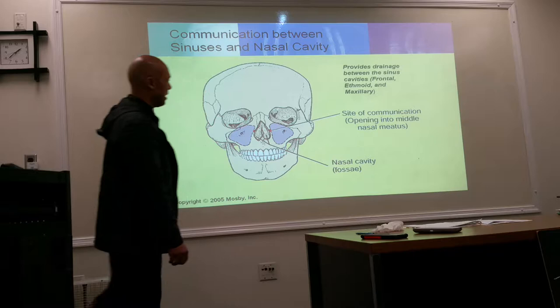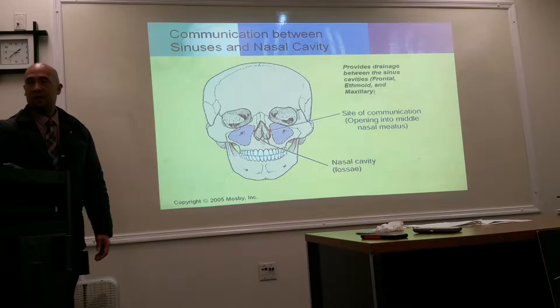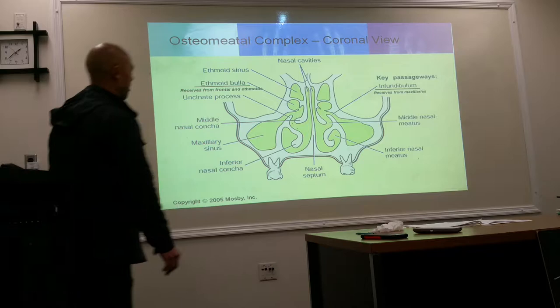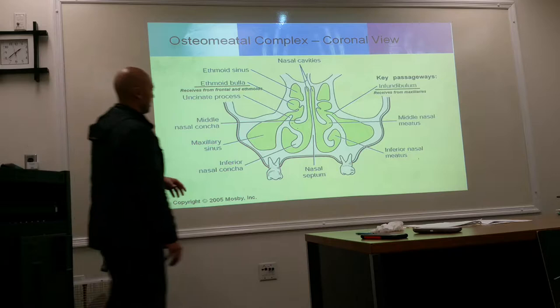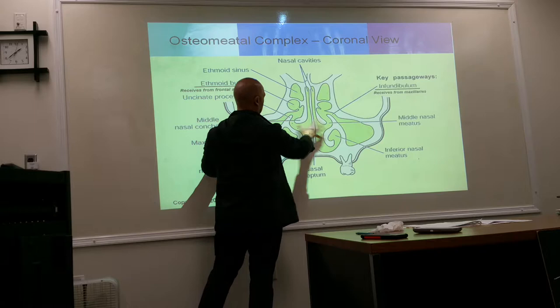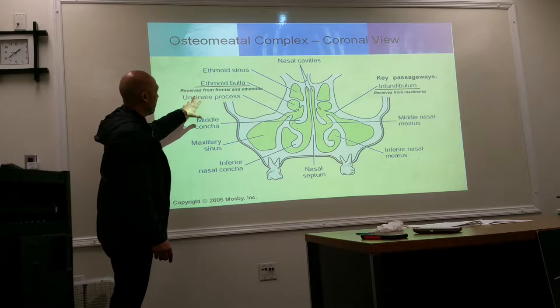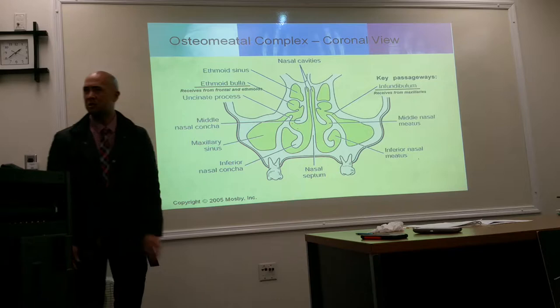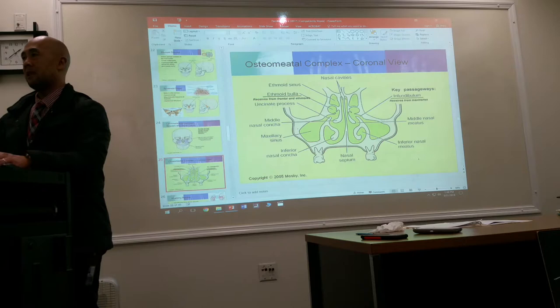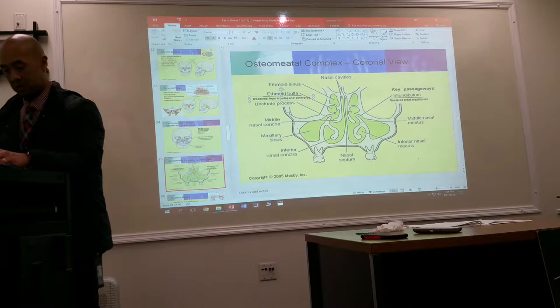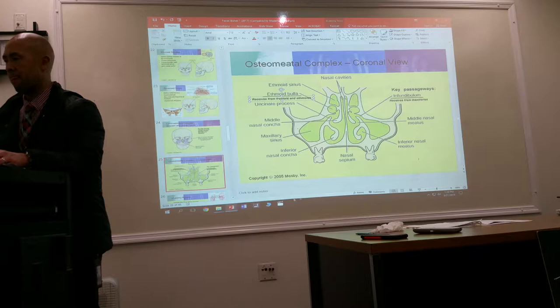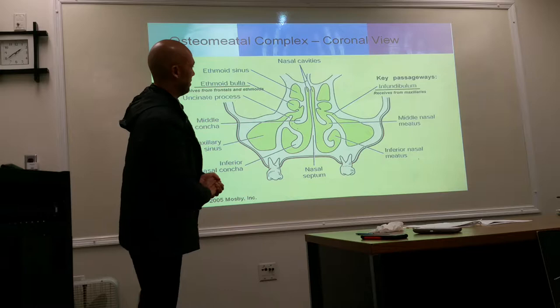Getting into the specifics of the osteomeatal complex — how the sinuses drain — the white part on the image is bone. The ethmoid bulla receives drainage from the frontal and ethmoid sinuses. The infundibulum receives from the maxillary sinuses so they can continue to drain.